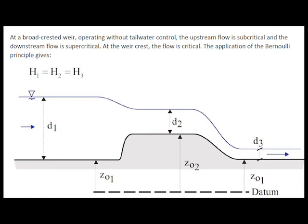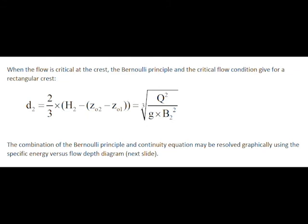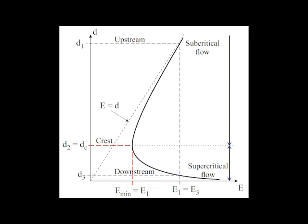At a broad-crested weir operating without downstream control, the upstream flow is subcritical, and the downstream flow is supercritical, and the flow is critical at the weir crest. The application of the Bernoulli principle gives h1 equal h2 equal h3. At the crest where the flow is critical, the Bernoulli principle and the critical flow condition can give the water depth at the crest for a rectangular channel.